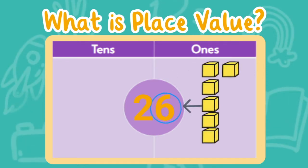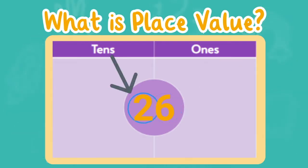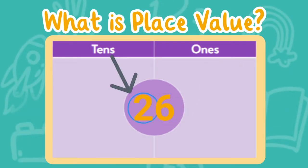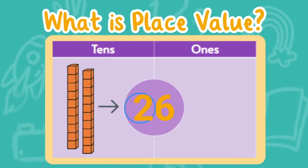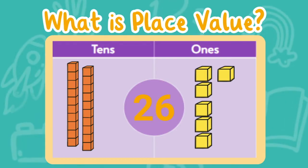Six is in the ones place because there are six ones. We can show that with six ones cubes: one, two, three, four, five, six. Now let's look at the tens place. Two is in the tens place — this means that two represents how many tens. We can show that with two ten sticks: one, two. A ten stick is made up of ten ones, so when we see a stick, we know it means ten. There are two tens in 26.